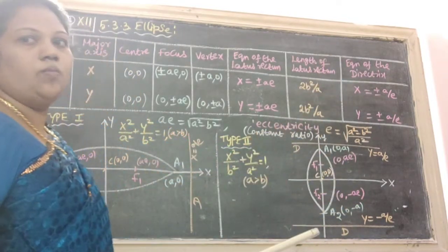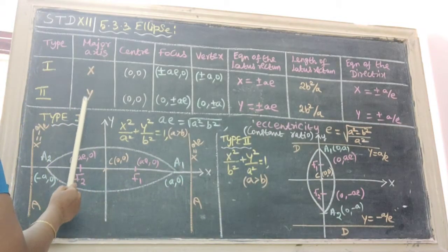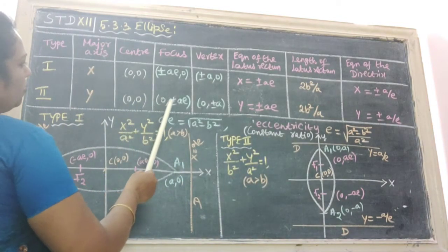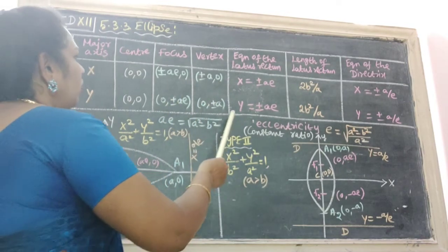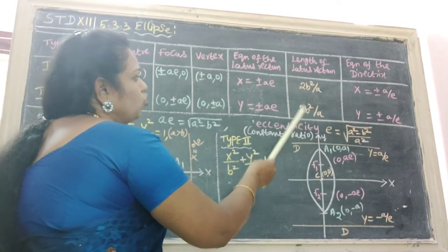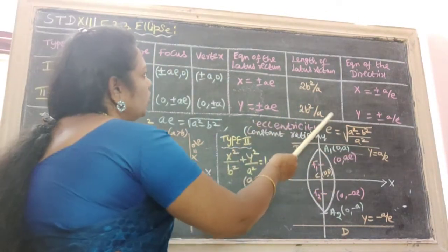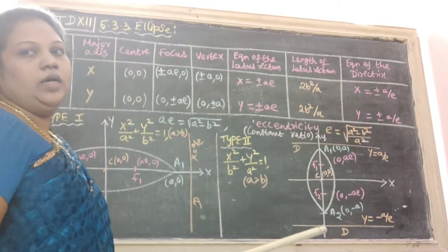Type 2, major axis y, center 0, 0, focus 0, plus or minus ae, vertex 0, plus or minus a. Equation of latus rectum, capital y equal to plus or minus ae. Length of latus rectum is 2b square by a. The last one, the equation of the directrix, capital y equal to plus or minus a by e.